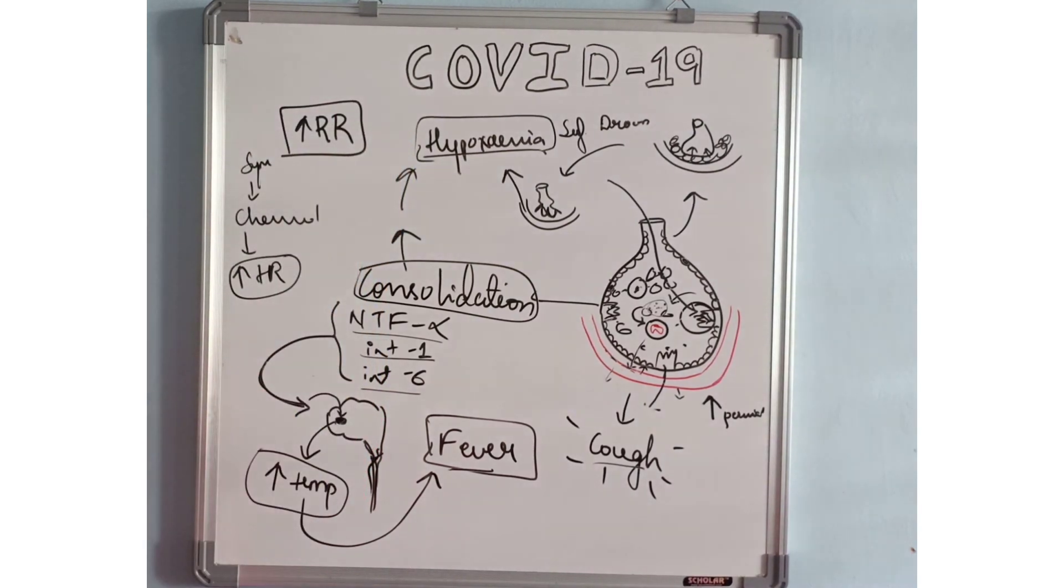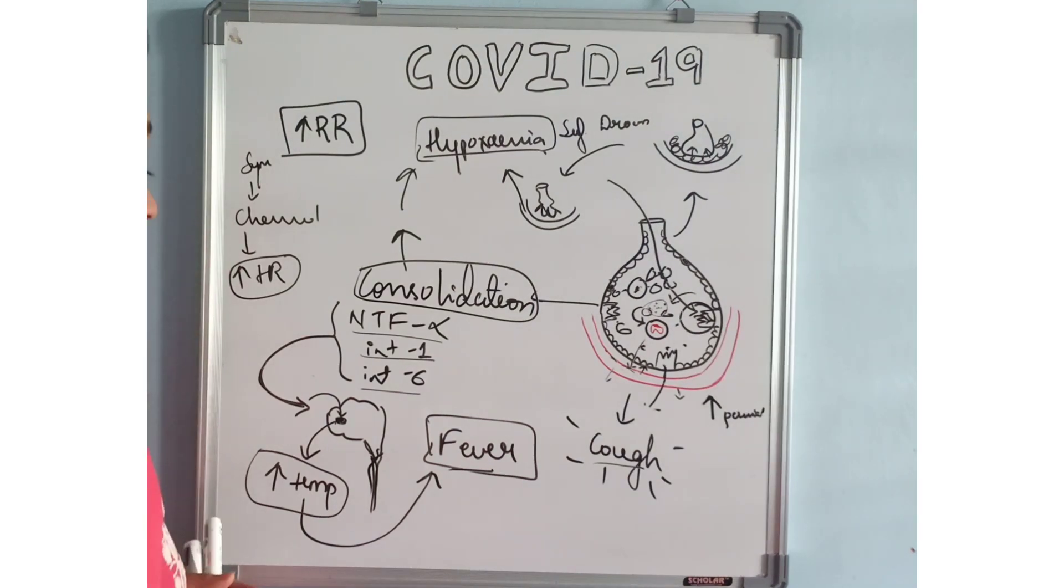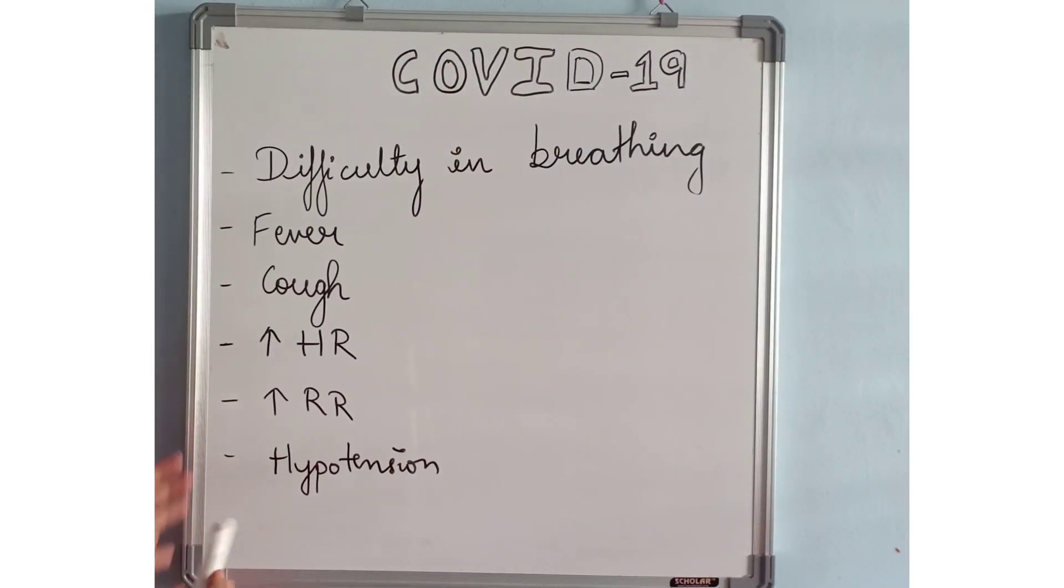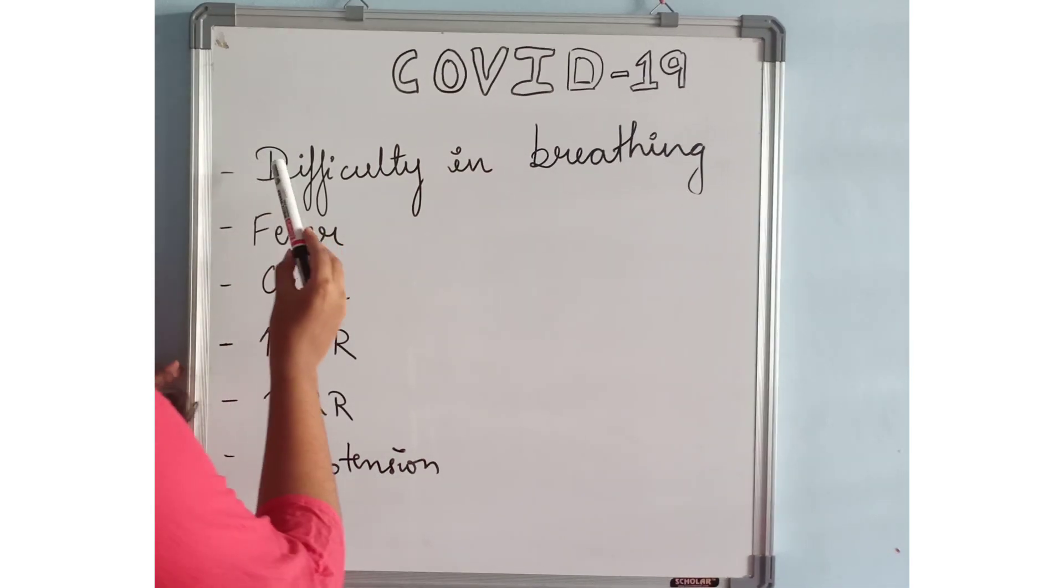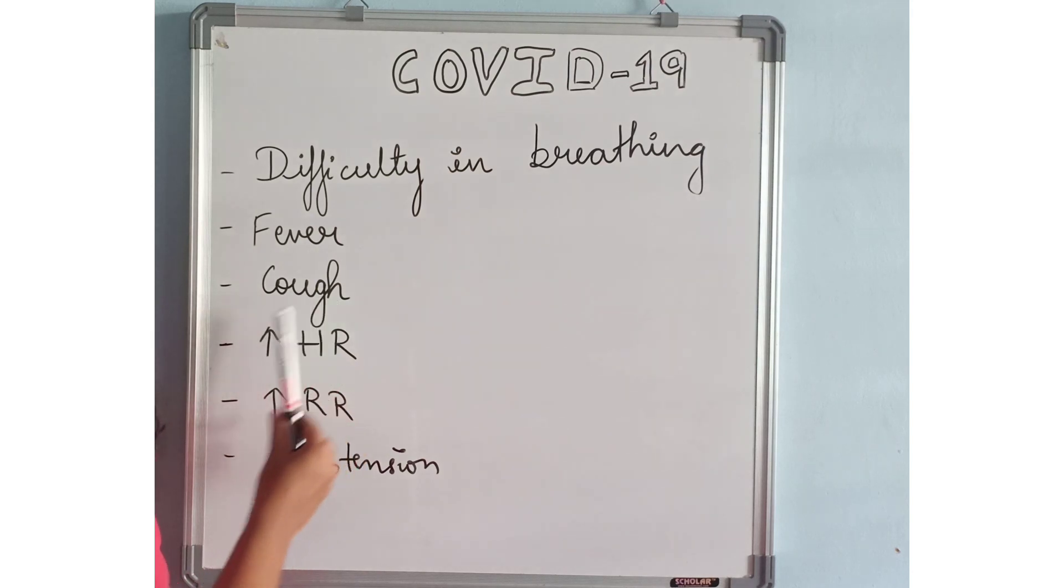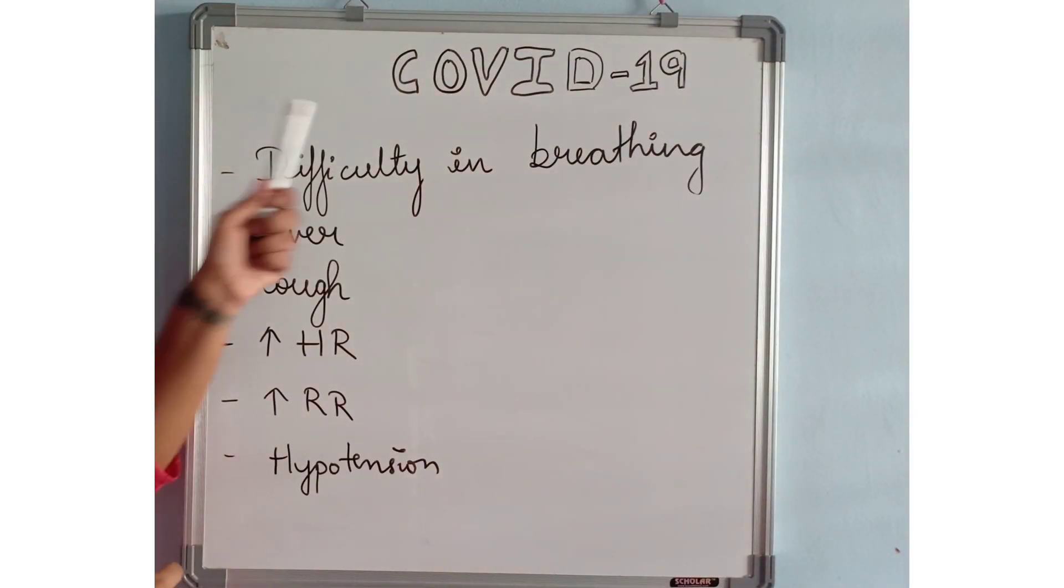The person is going to be tachycardic, there is going to be tachypnea, cough, and fever. Let's sum up the symptoms we learned in this video: difficulty in breathing, fever, cough, increased heart rate, increased respiratory rate, and hypotension are some of the common symptoms of COVID-19.